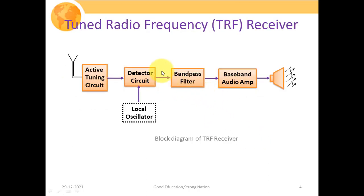This particular figure is showing the block diagram structure of the tuned radio frequency receiver. Initially, we have this antenna, which accepts the RF frequency signal from the environment. With the help of active tuning circuitry, we tune into a specific frequency range. After proper RF signal amplification, we pass it through the detector, which is specifically the demodulator circuitry.